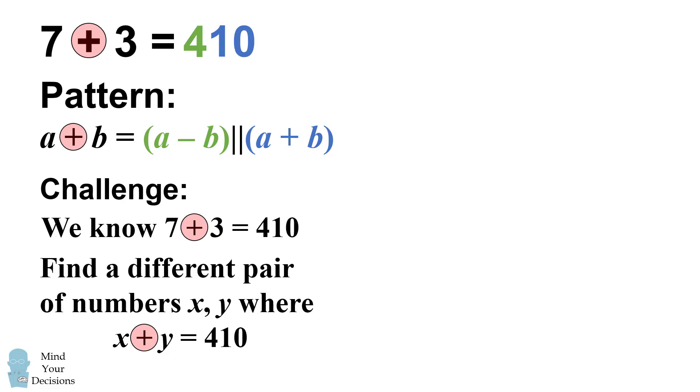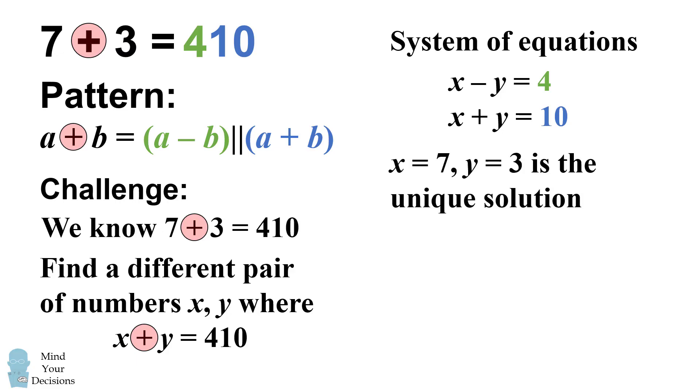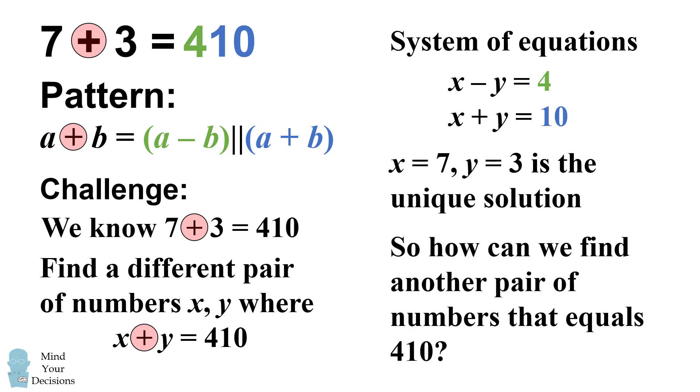We might try solving this by a system of equations. We want x minus y to equal 4 and x plus y to equal 10. But if we solve this system of equations, the only solution is x equals 7 and y equals 3. That's the unique solution to this set of equations. So it seems like we can't find another solution. But this is a puzzle and you have to think creatively. How can we find another pair that equals 410?